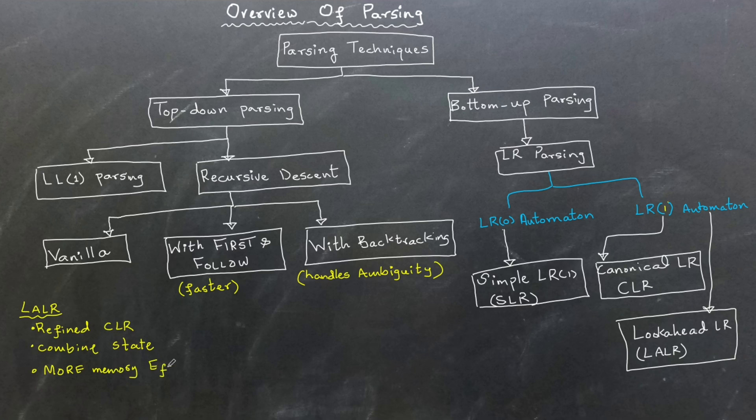Among all these parsing schemes, CLR is most powerful as it can handle the largest set of context-free grammars. However, this power comes at the cost of increased complexity and slower parsing speed.